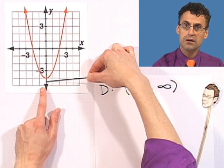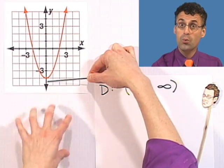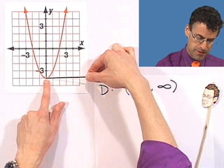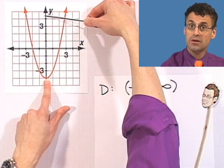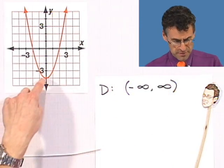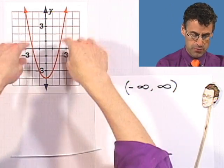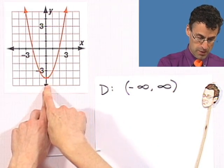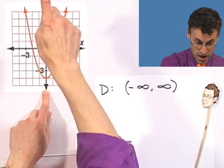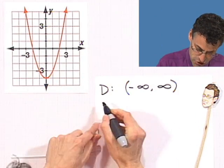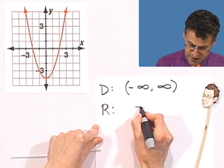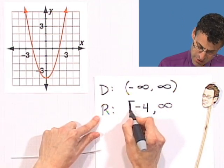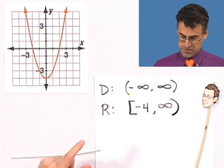Beyond negative four, the graph no longer resides — there's no red below negative four. So the range is from negative four on up. One way to think about it is to imagine squashing the red curve against the y-axis and asking what gets hit. What gets hit is all values from negative four on up. So the range is [-4, ∞): I include negative four with a square bracket, but I can never touch infinity, so I write an open parenthesis there.